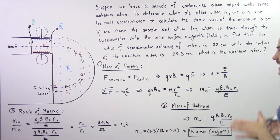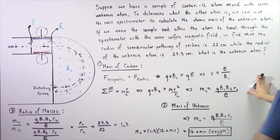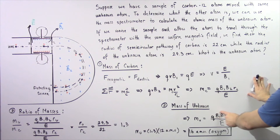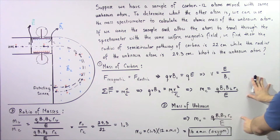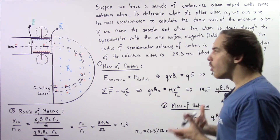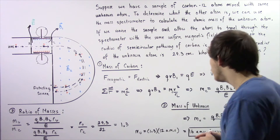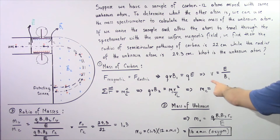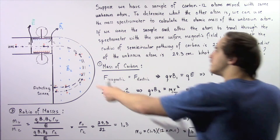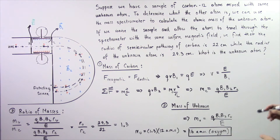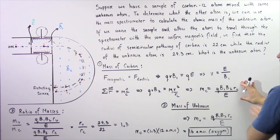In step two, we follow the same procedure and find that the mass of the unknown atom equals Q times B1 times B2 times R — the radius of the unknown atom — divided by the electric field E. Notice that the charge on both atoms is exactly the same, and the velocity is also the same since it equals E over B1, which depends only on constants. So we now have two equations giving us the mass of each atom.